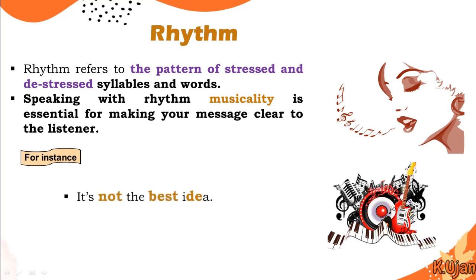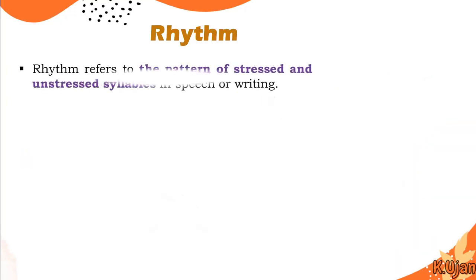For instance, take the sentence: 'It's not the best idea.' We put stress on the word 'not' and de-stress the other words. This stressed and de-stressed pattern is known as rhythm. Here is another example: 'I want my brother to win.' Stressing certain words and de-stressing others — this pattern is known as rhythm.